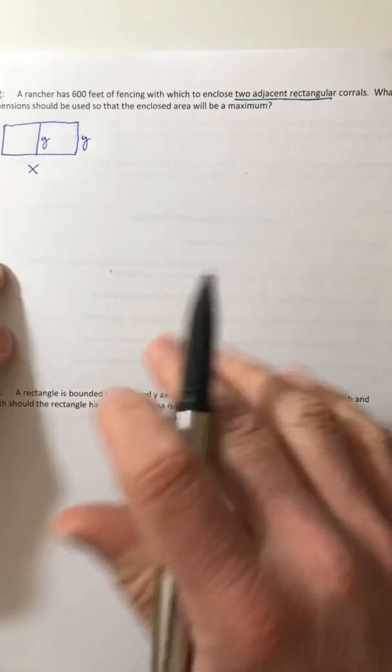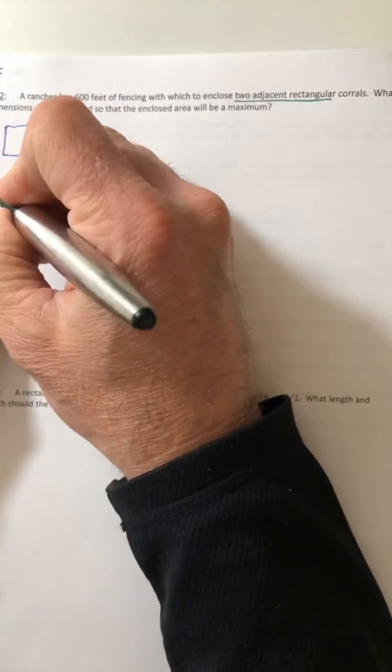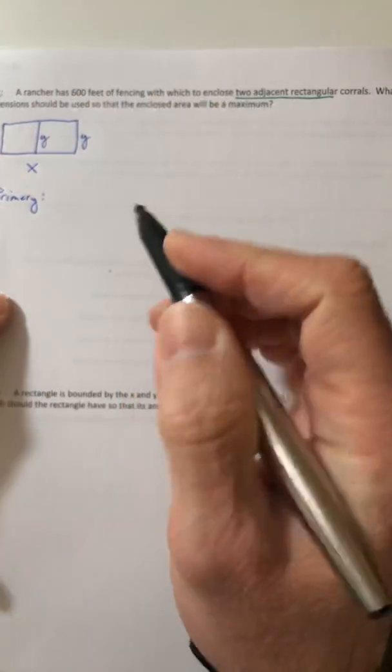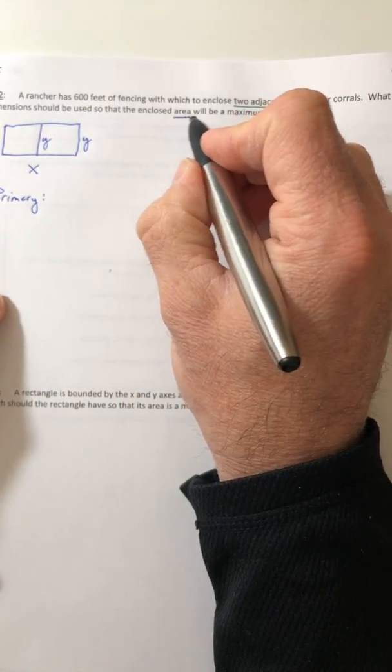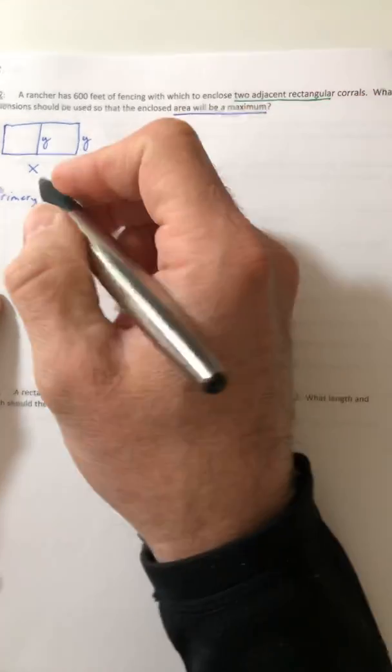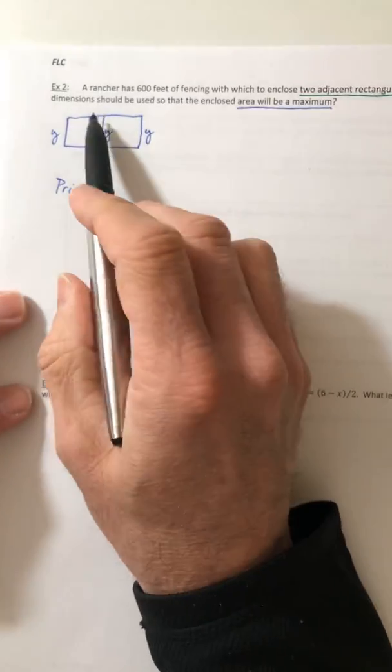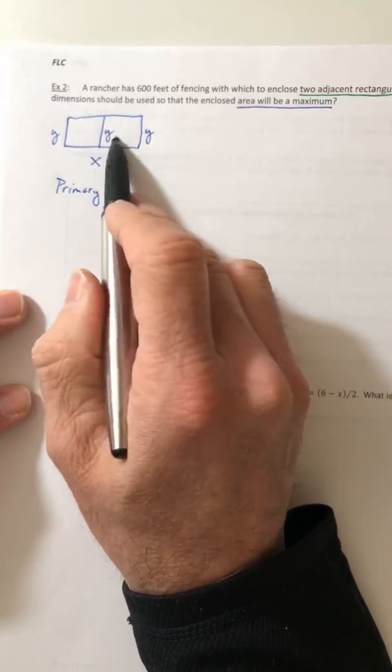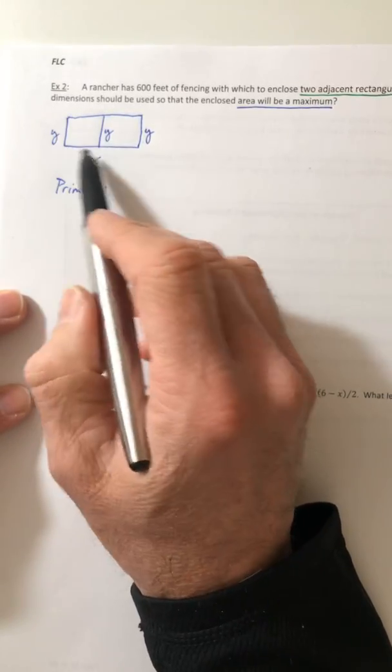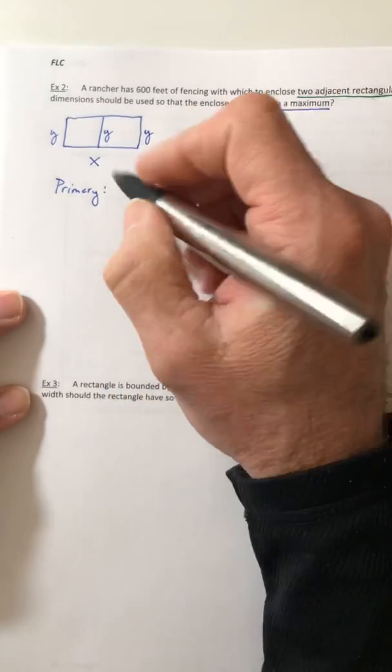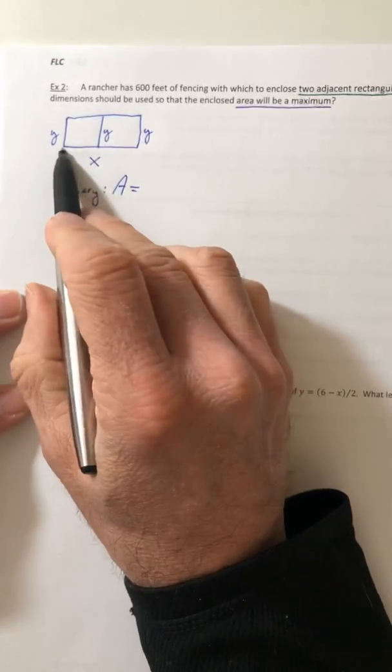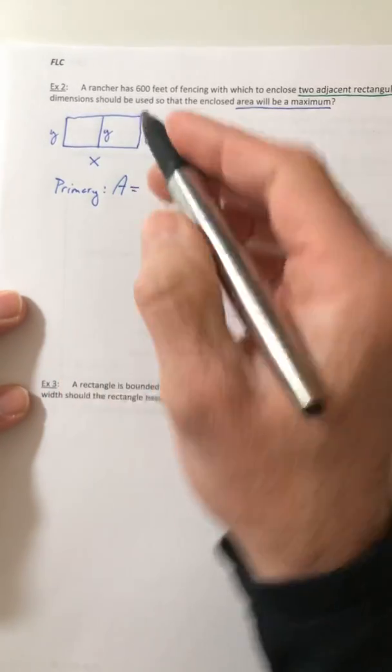All right, so let's get our primary and secondary. So your primary is whatever we're going to try to maximize or minimize. So it says the area will be a maximum. So I need the max of this whole thing. Not the max of each one individually, but the entire field or corral. So your area is still the base, which is X, times the height.